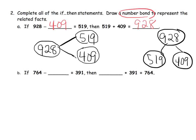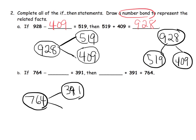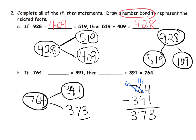Similarly, for the second number bond: 764 is at the top and one part is 391, but the other part is missing — we have to actually subtract. 764 take away 391: 4 minus 1 is 3. We have 6 tens take away 9 tens — we can't do that, so we unbundle, giving us 16 tens take away 9 tens, which is 7 tens. Then 6 hundreds take away 3 hundreds is 3 hundreds. So the missing part is 373, and we fill that in on the number bond.